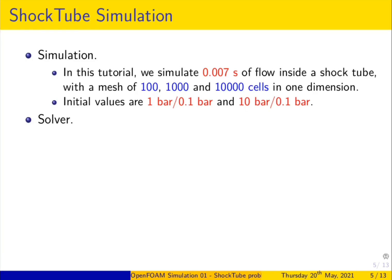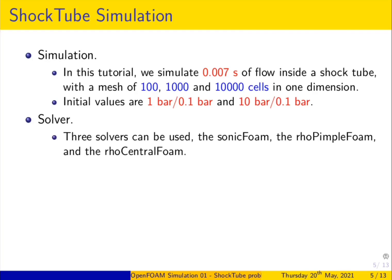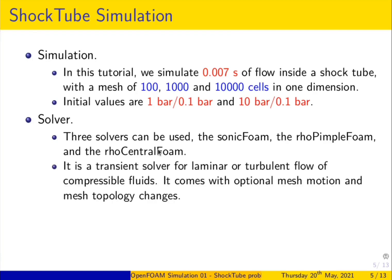The initial values taken are 1 bar and 0.1 bar, which means a pressure ratio of 10, and 10 bar and 0.1 bar, which means a pressure ratio between two chambers equal to 100. Three different solvers can be used: one is sonicFoam, which was used in old versions of OpenFOAM and was later replaced by rhoPimpleFoam. These solvers are almost similar with a few changes.